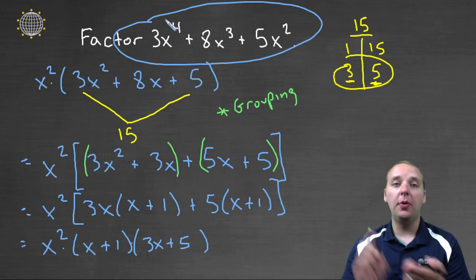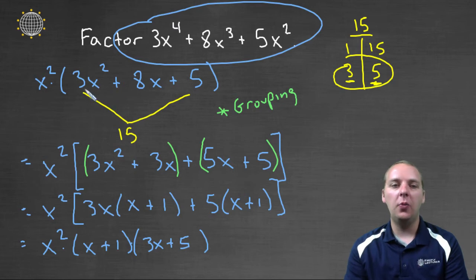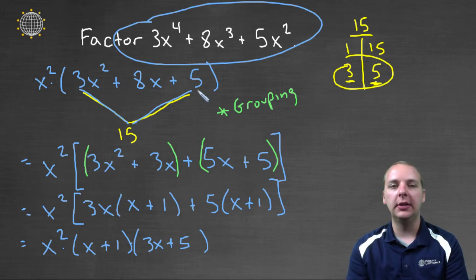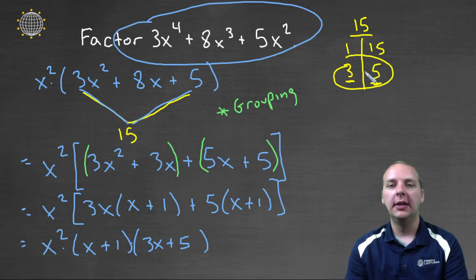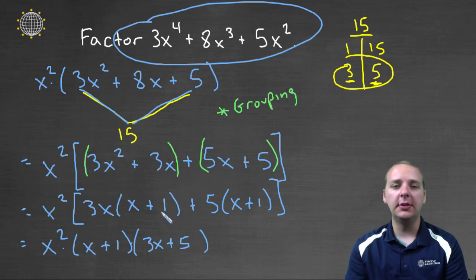So your general steps are pull out any common factors that you have. And then if your a is not 1, a good technique you can try is this grouping method where you separate the middle term into two terms based off of what the product of the leading term, the leading coefficient, and the constant term. So you can look at those factorizations and decide how you could separate the middle term in order to finish this using factor by grouping.